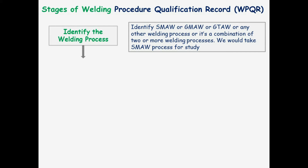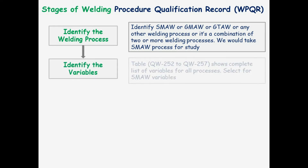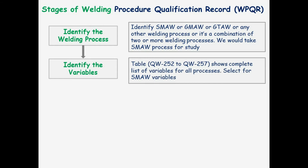Next is to identify the variables. Table QW-252 to QW-257 shows a complete list of variables for all processes. Select the SMAW variables from this table.